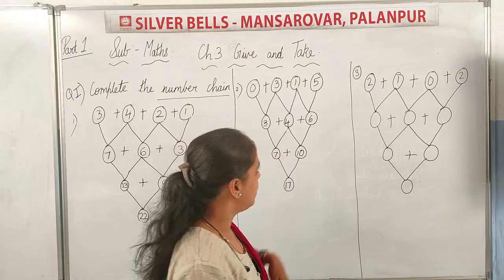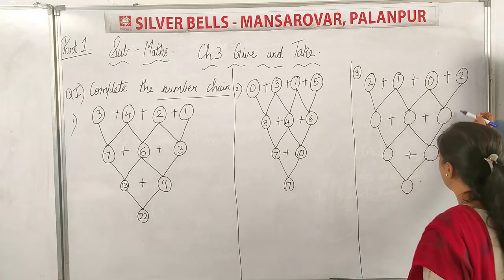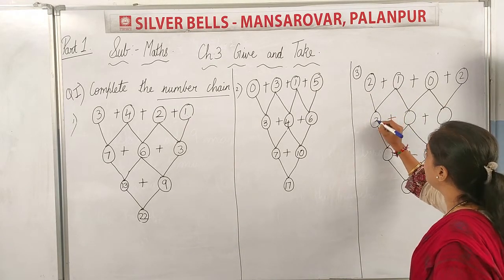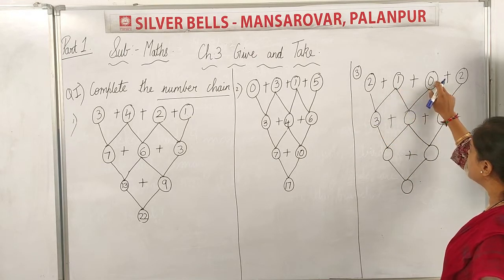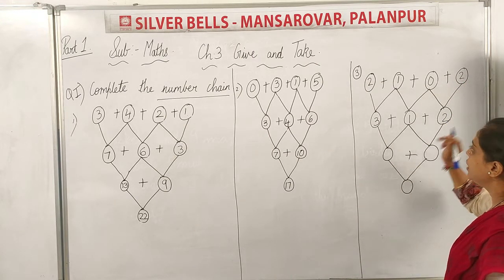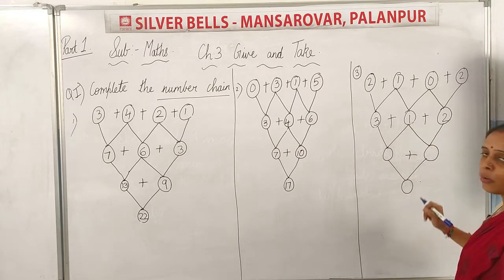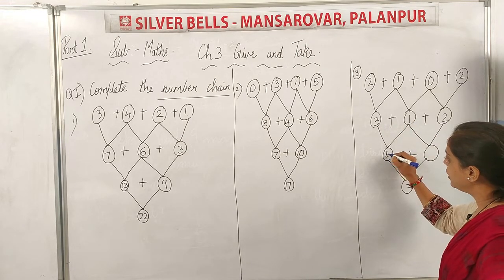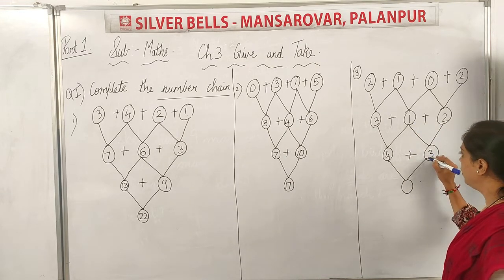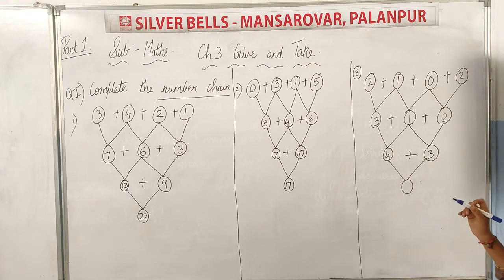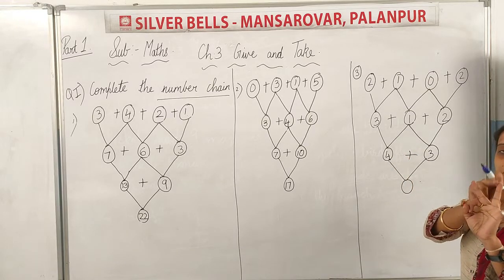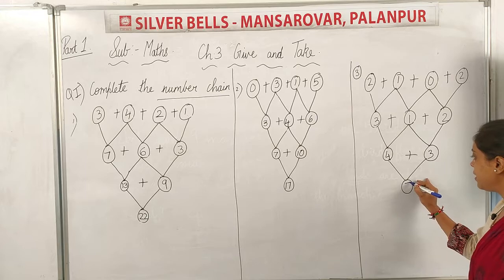Now let us look at this chain example: 2 plus 1 plus 0 plus 2. First, 3 plus 1 is 4. Then 1 plus 2 is 3. Now 4 plus 3 — hold up 3 fingers and start counting after 4: 5, 6, and 7. So 4 plus 3 is 7.